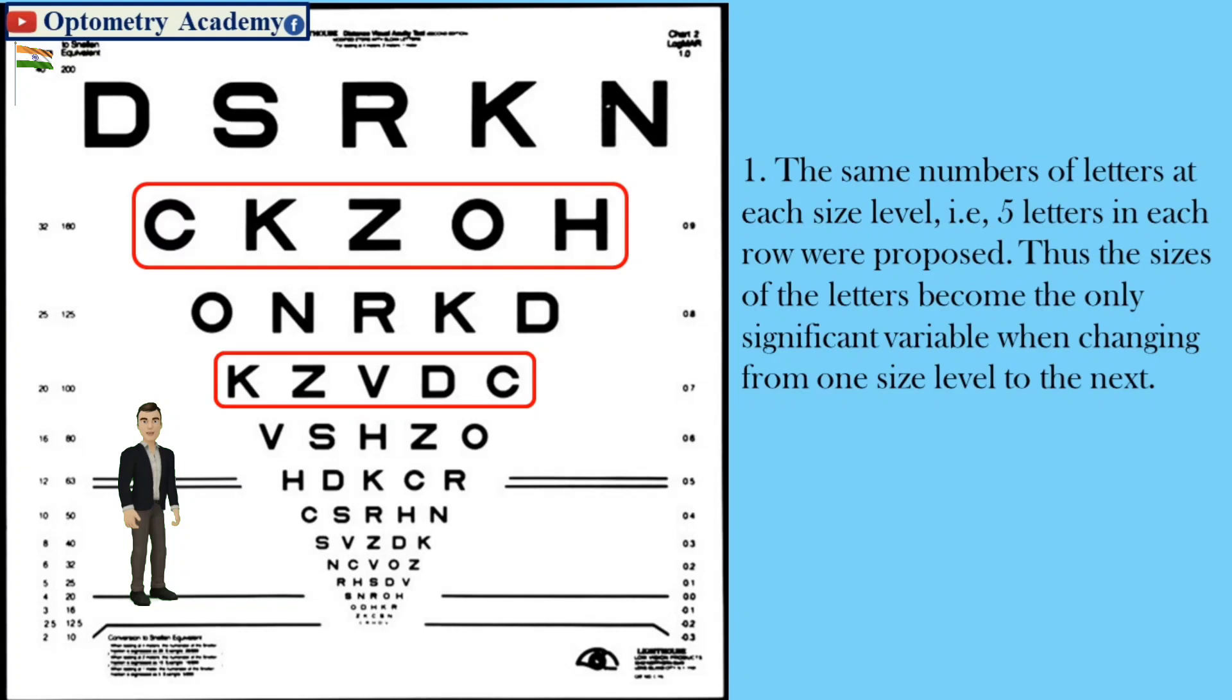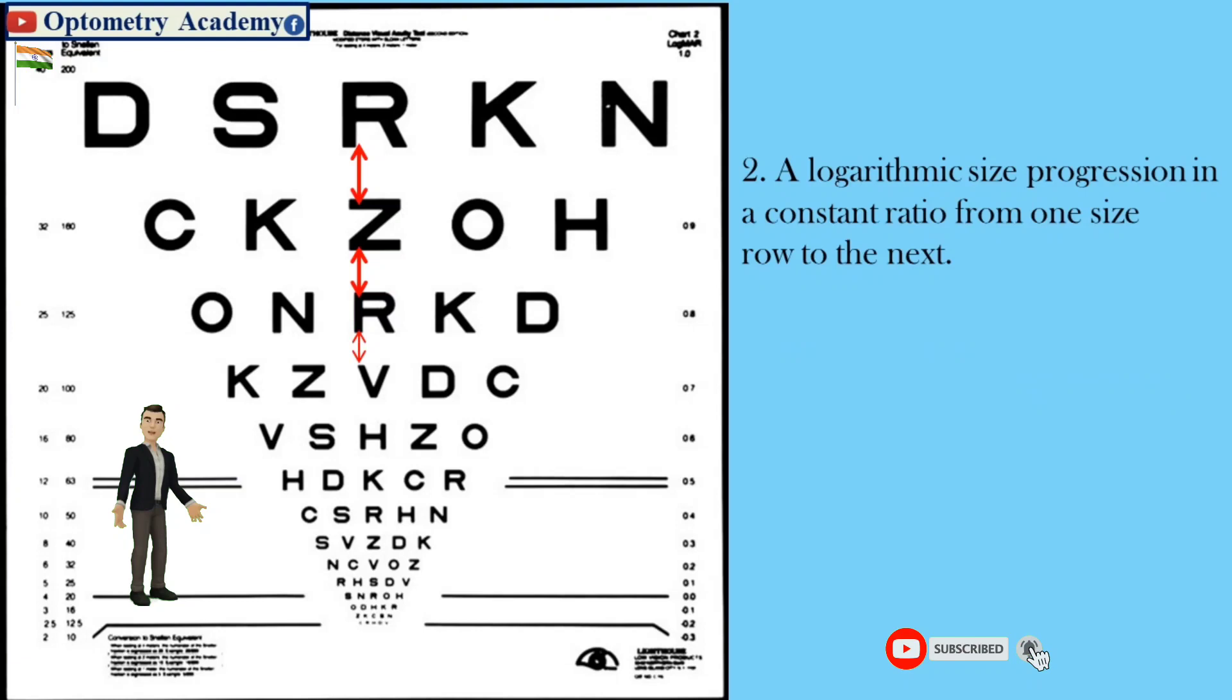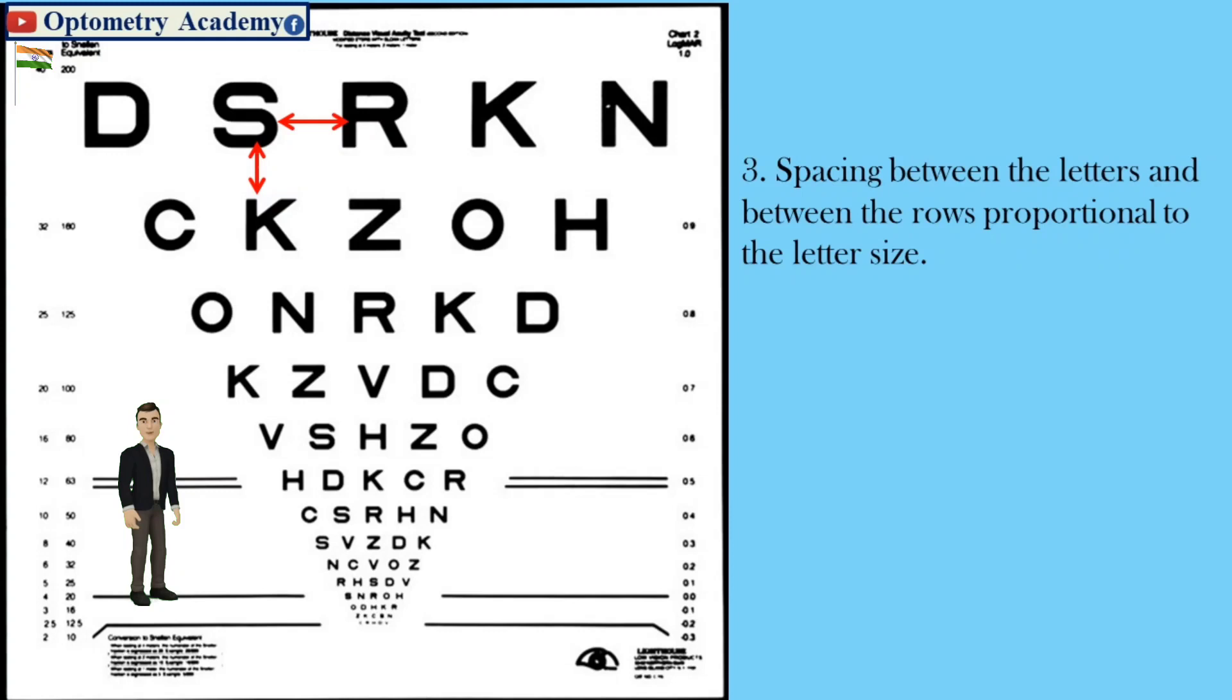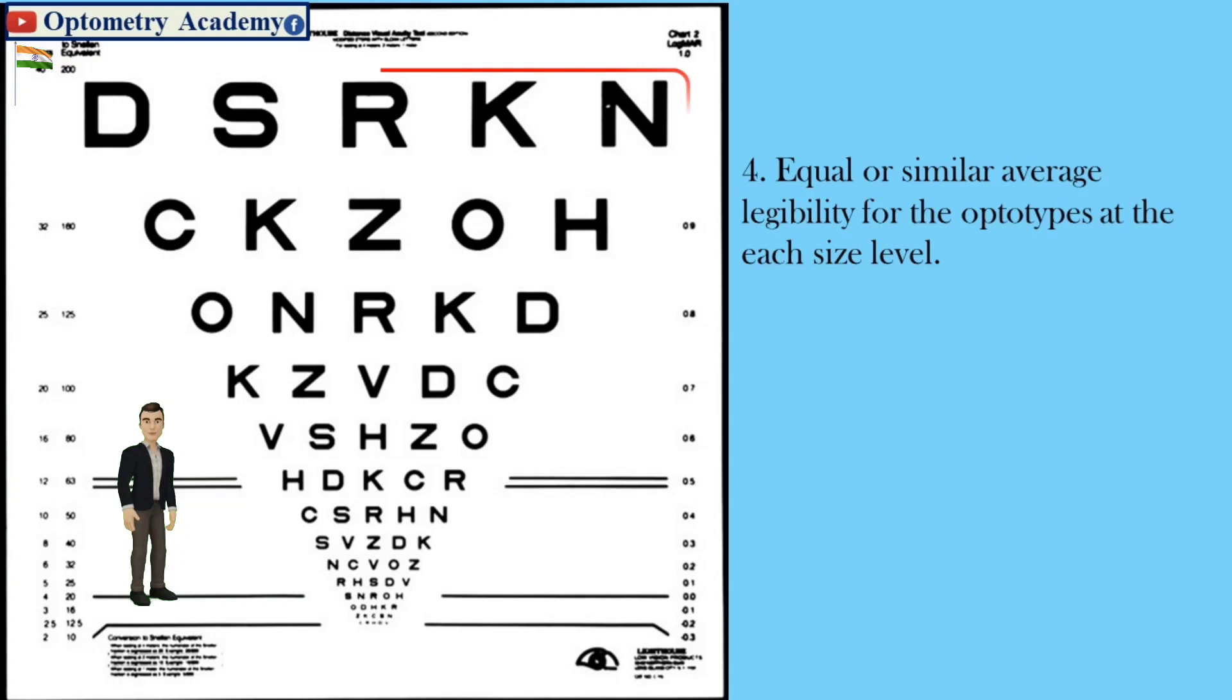Second, a logarithmic size progression in a constant ratio from one size row to the next. Third, spacing between the letters and between the rows proportional to the letter size. Fourth, equal or similar average legibility for the optotypes at each size level.